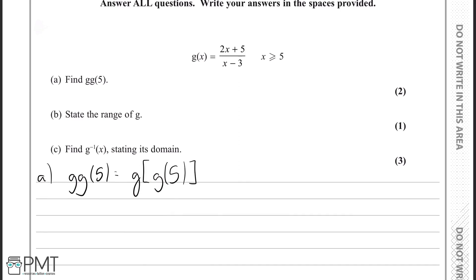So let's start by finding what g of 5 is. So g of 5 is simply going to be the function g that we have here, but we'll have 5 in replacement for the x. So we'll have 2 times 5 plus 5 over 5 minus 3. And I put the brackets around the 5s to clearly see the substitution that I made for the x's into the 5.